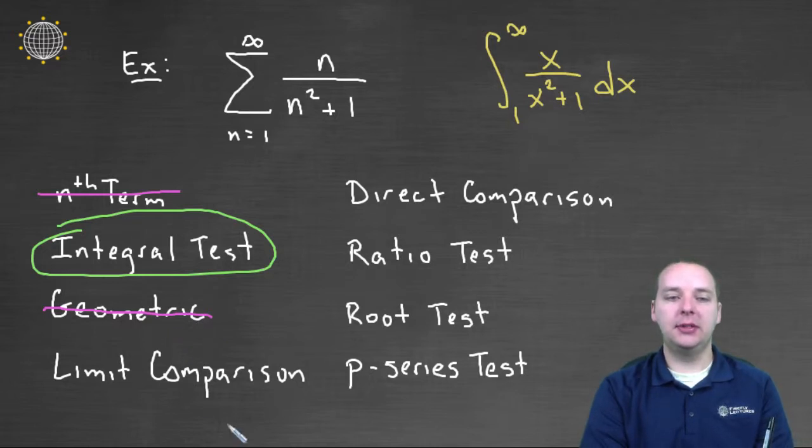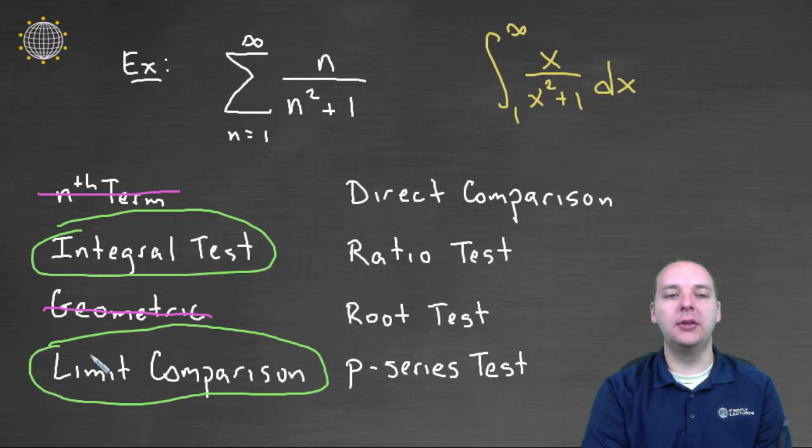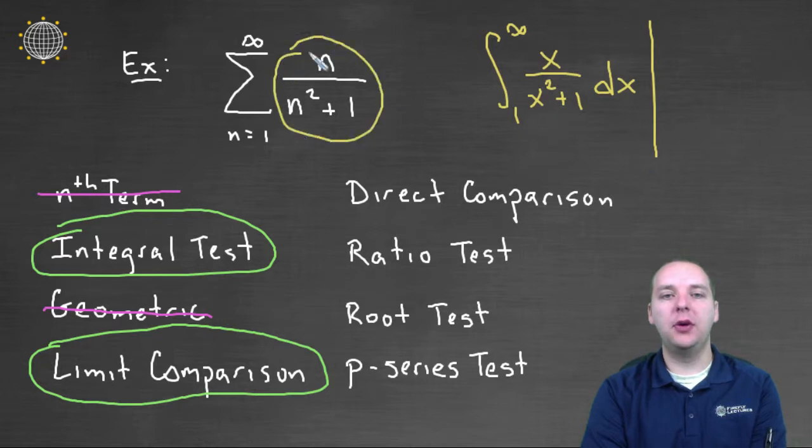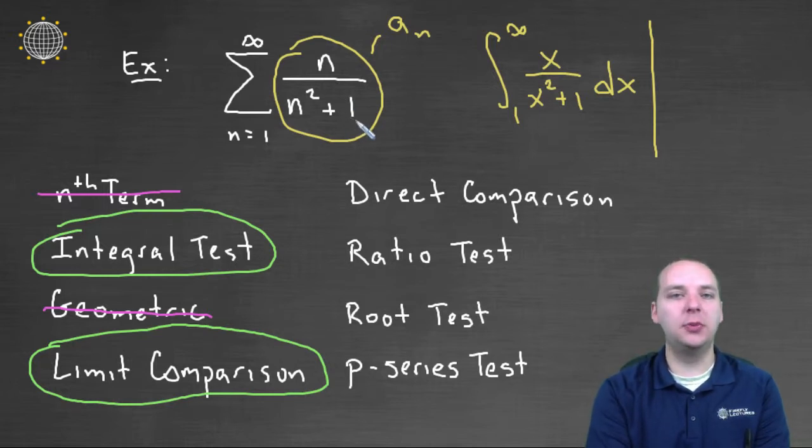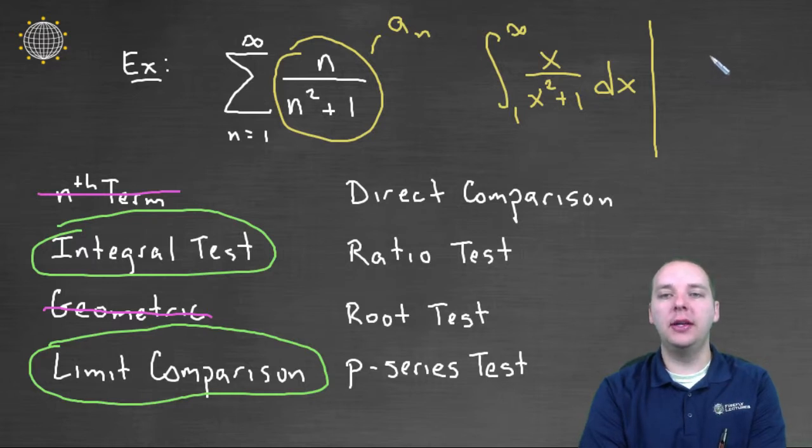The limit comparison test. This is a possibility we might look into. The reason being is because if you look at the terms in the sequence, you know, if you call these a sub n, the terms you're adding up, I think there is a simpler version of a sub n that we could compare this guy to. For example, if we drop the plus one, which is negligible, that's not going to really affect the convergence. You would get roughly n over n squared, which would reduce to one over n. And so if you looked at the series one over n, we could compare this guy's convergence with this guy's convergence. That would be something good to do.